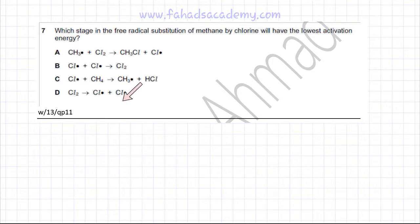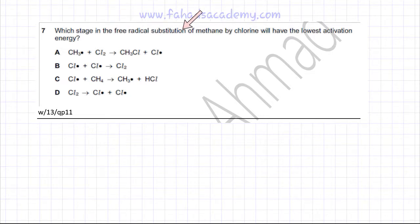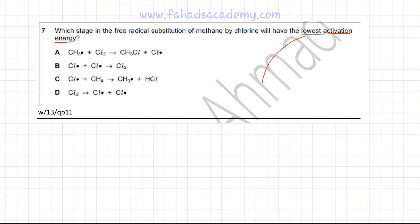He's given you the steps of the reaction — different steps in the reaction. Which stage in the free radical substitution of methane by chlorine will have the lowest activation energy? We need to figure out which reaction is going to have the lowest activation energy. Remember, activation energy is the energy needed to start a reaction.